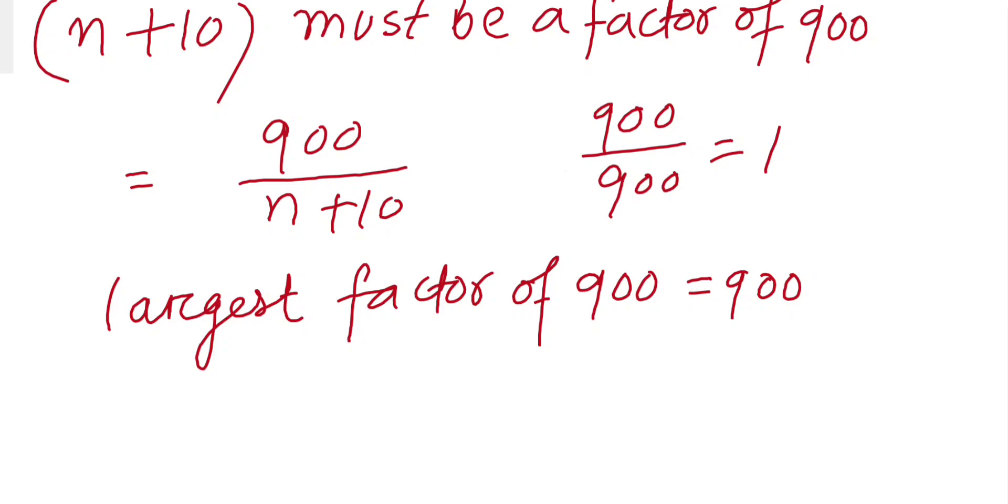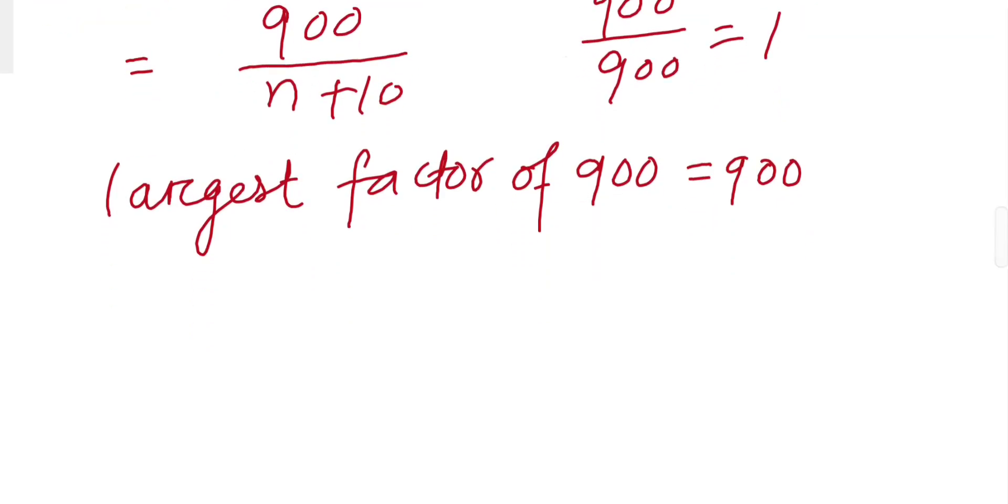Because 900 divided by 1 equals 1, the largest factor of 900 is 900. That means n+10 must be 900.